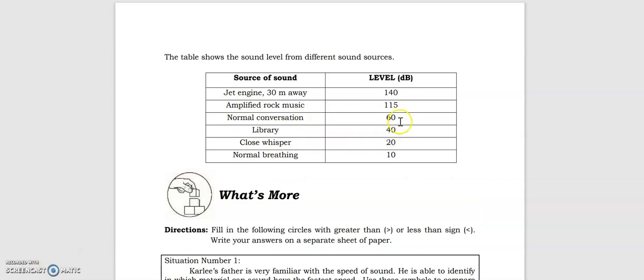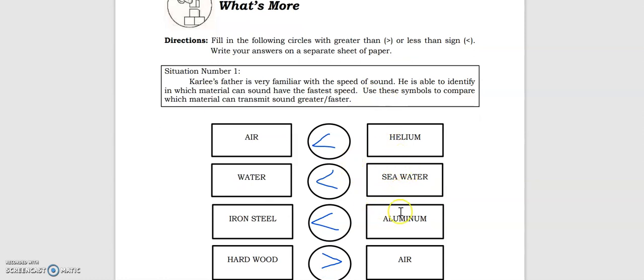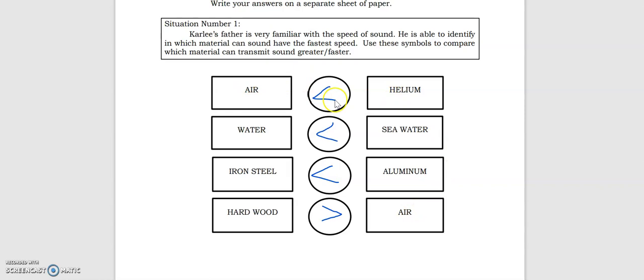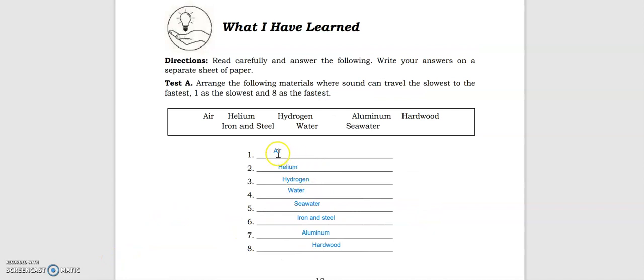The table shows the sound level from different sound sources. Just go over. Let's answer the questions. Pause the video if you want to focus on the answers. Between the two, helium has a greater speed of sound. It can transmit greater or faster speed compared to air. Then water, iron steel, hardwood, seawater, aluminum compared to iron steel. Then hardwood compared to air. Jet engine has the loud sound. Greater sound. Amplified rock music. Then jet engine. Then we have the library has a greater sound compared to the normal breath. So slowest air. Then the fastest is the hardwood.